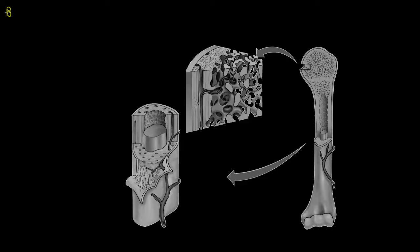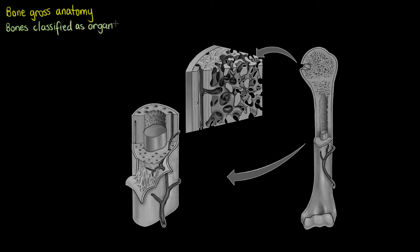In this lesson I'm going to be teaching you about the gross anatomy of a bone, including all the standard structures you'll find with a brief explanation of their function. The first thing to point out is that bones are made up of several different tissue types, which is why we classify them as an organ, as we learned in the Levels of Structural Organization video.